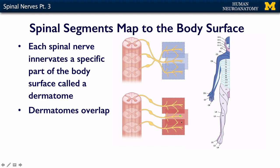Dermatomes do overlap, and I've talked to neurologists about this — I think you need to lose probably more than one spinal nerve before you would notice a big gap on your body's surface. But if you do some really fine testing, you should be able to find that little area that doesn't have any innervation.